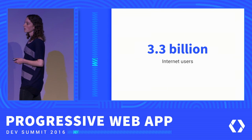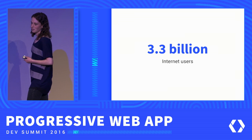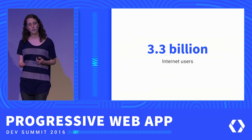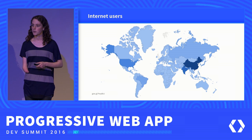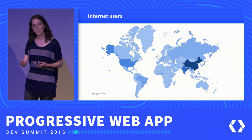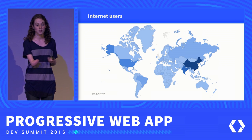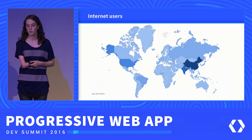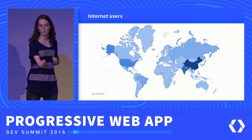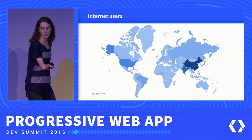Today there are roughly 3.3 billion users using the internet around the world. And if we actually drill down and look at where these users are, this is a map of internet users today by country. You'll see that while there are some users in the United States and some in Europe, we see a much more pronounced number of users in a lot of these other areas.